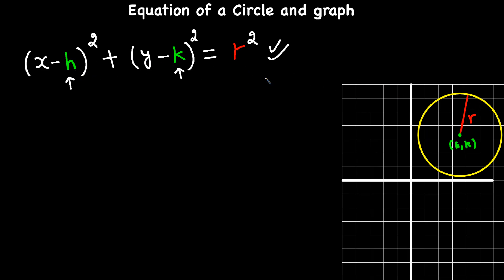This is the standard form of the equation, so we can write an equation of a circle if they give us the center and the radius. If the center of a circle is at the origin, which is (0, 0), then H and K are both 0, and the equation simplifies to X squared plus Y squared is equal to R squared.